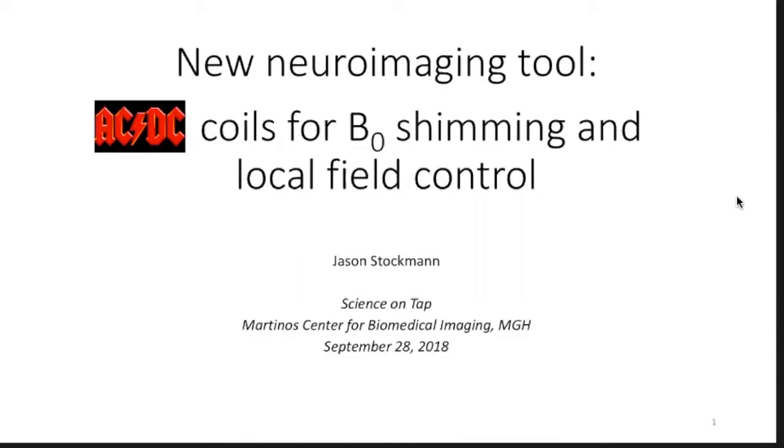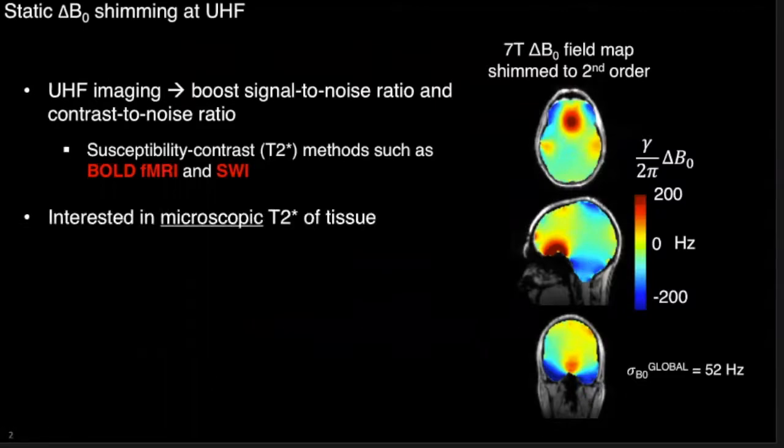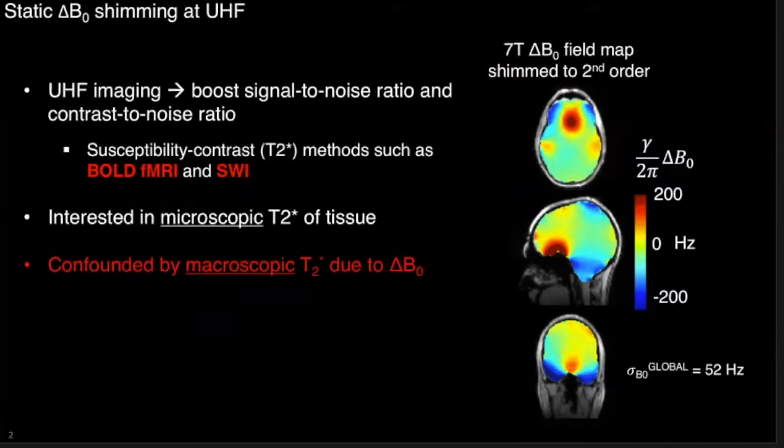This work was motivated by the need to deal with a very pressing problem, especially at ultra-high field, which is the B0 shim. As you know, the B0 shim gets worse as you go to higher fields, and this is a big problem for functional imaging because you're interested in the microscopic T2 star of the tissue, but the bad B0 shim in the body caused by tissue-air interfaces will obscure that microscopic T2 star with macroscopic T2 star variations over the voxel, which you can see in this B0 map.